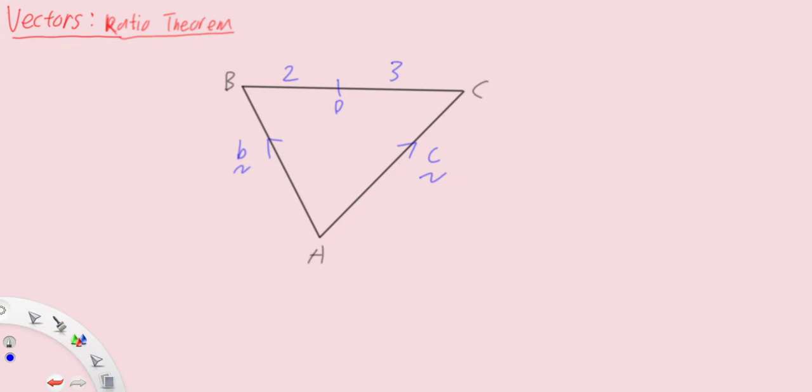There is actually a way to find vector AD. One way is the old way where we find vector BD and then we take AB plus BD to give us vector AD, or we take vector AC plus vector CD, which equals AC minus vector DC.